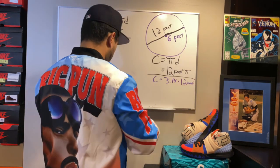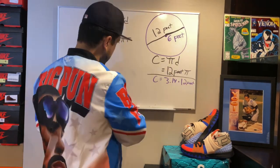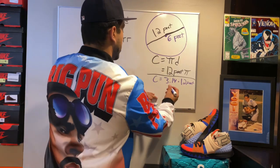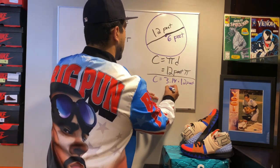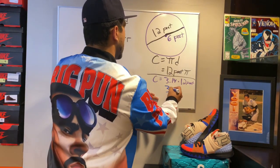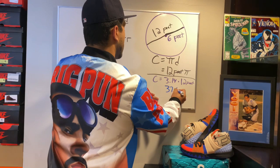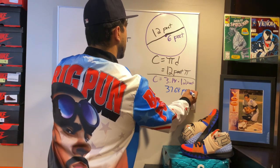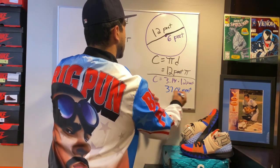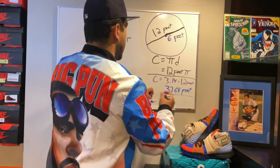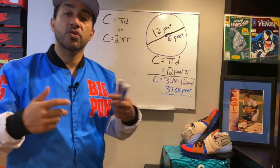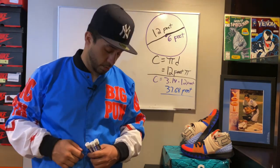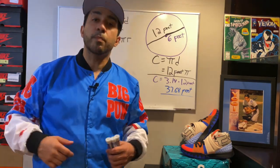When I multiply those in my calculator, I get a circumference of 37.68 feet. That is how you find the circumference of a circle.